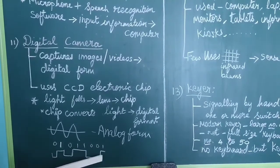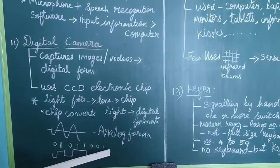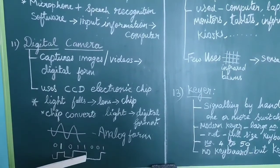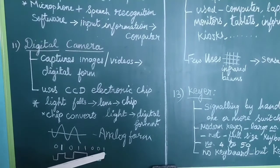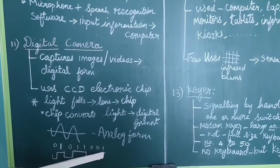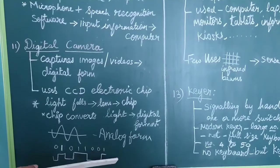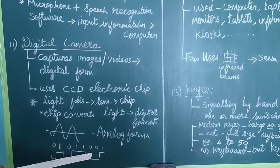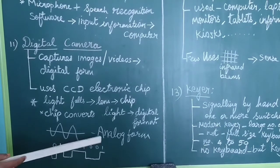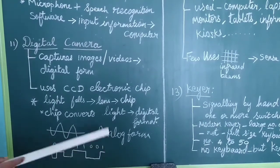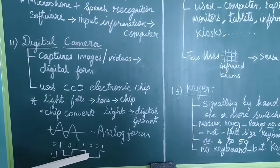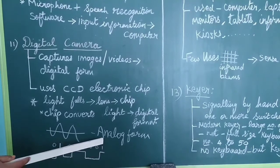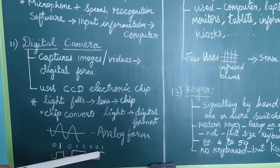This is the digital form. The image is converted into digital format and stored directly in the computer. The digital camera converts the analog picture into a digital formula. So the output is in digital format, ready for use in the computer. Next we are going to see the next input device.